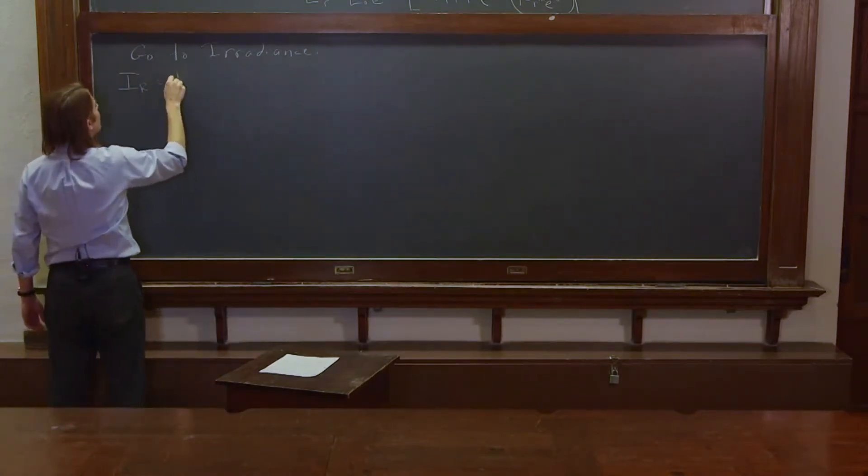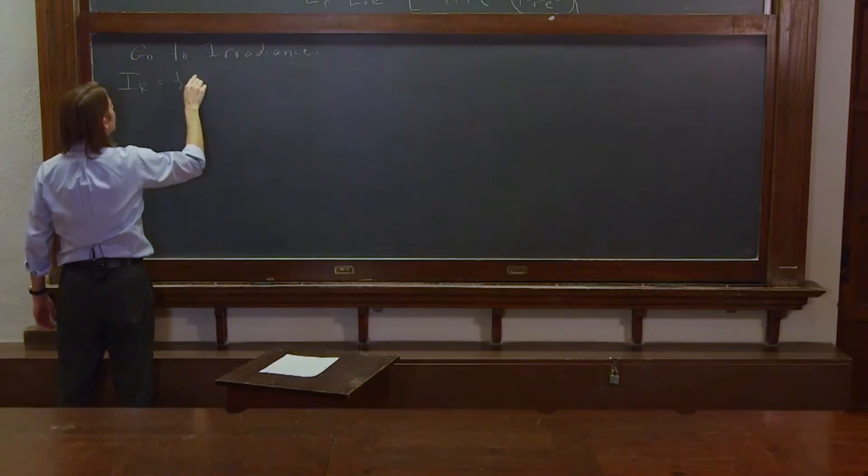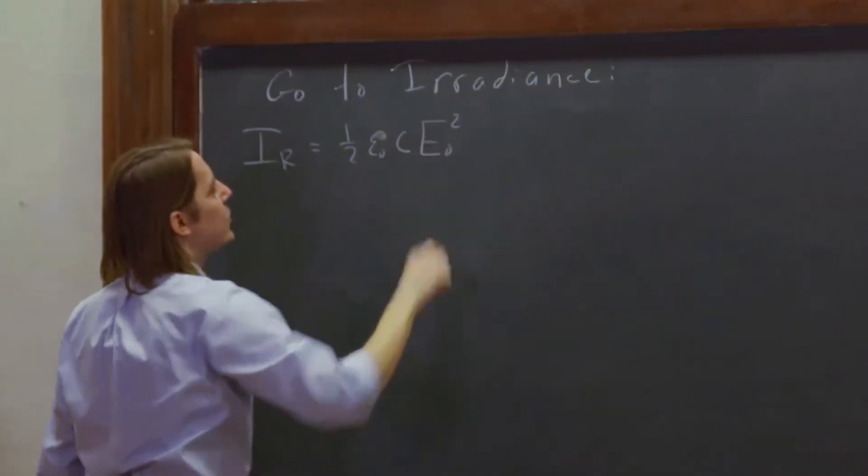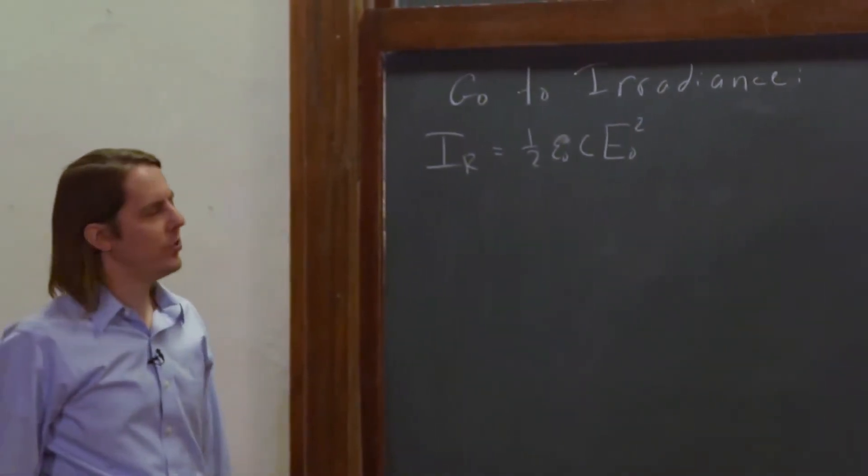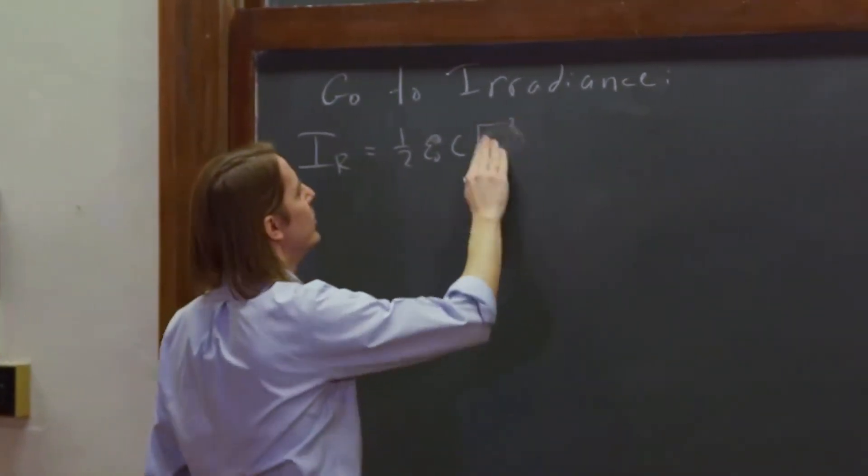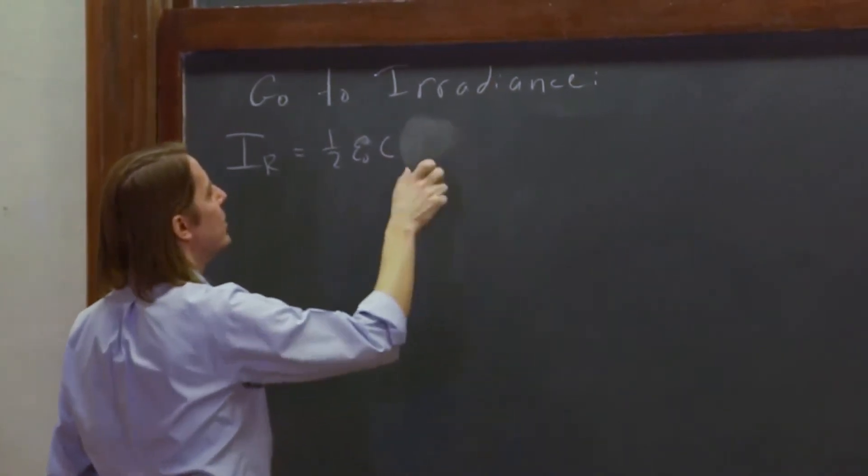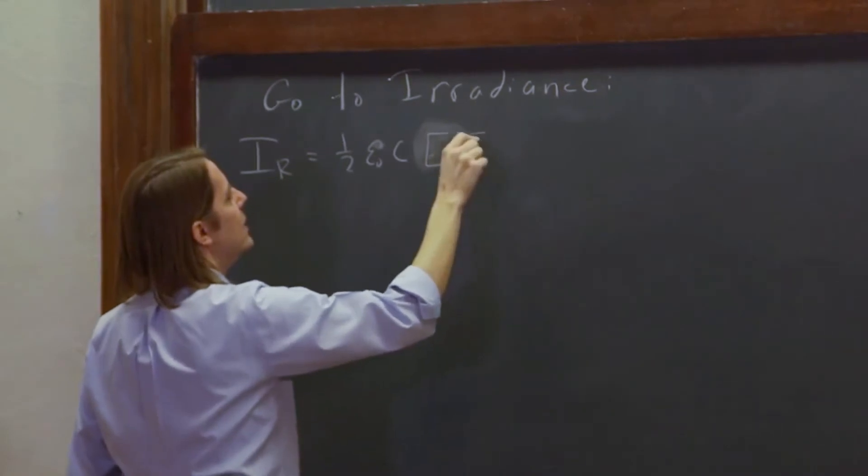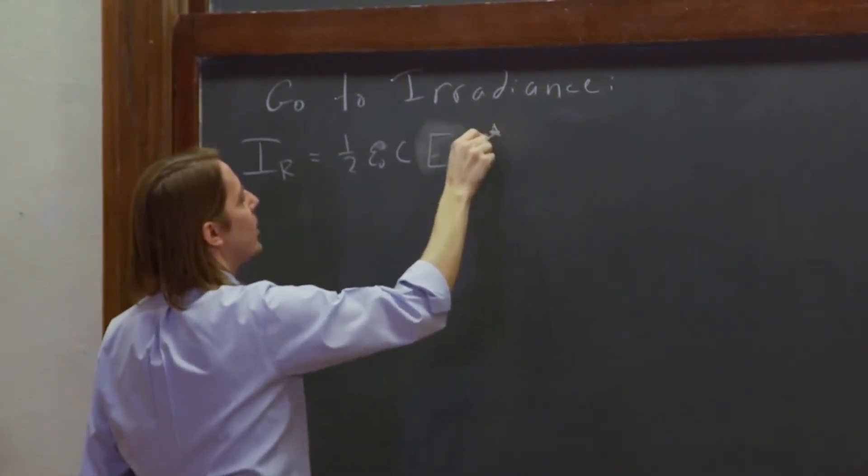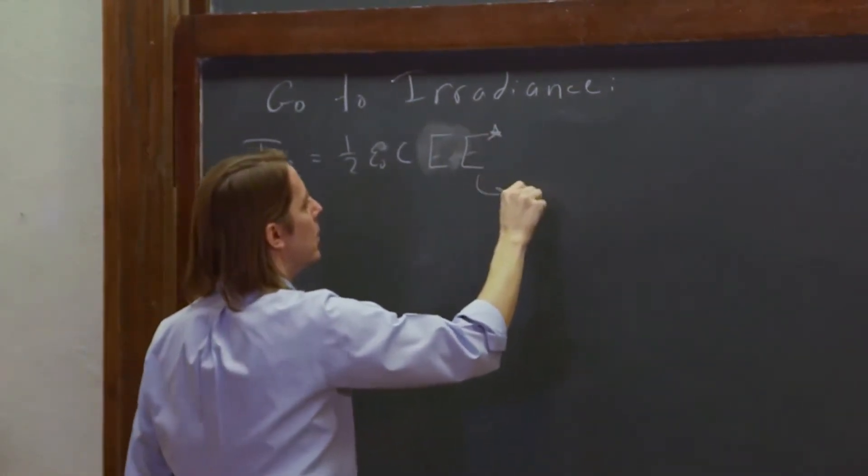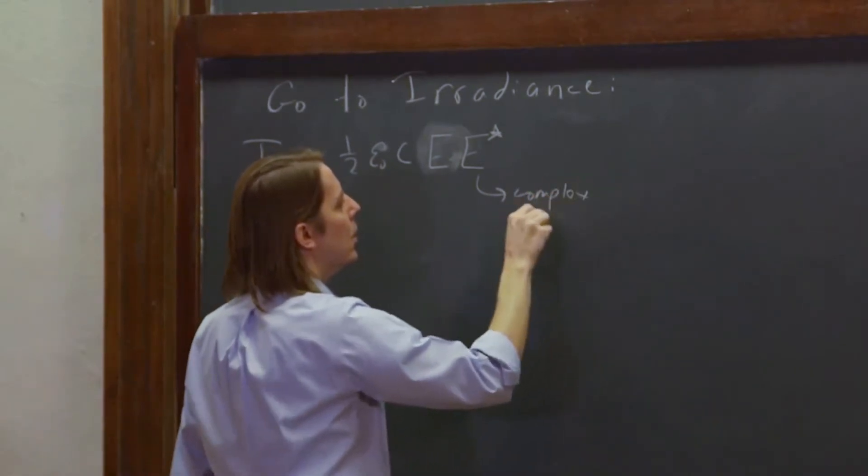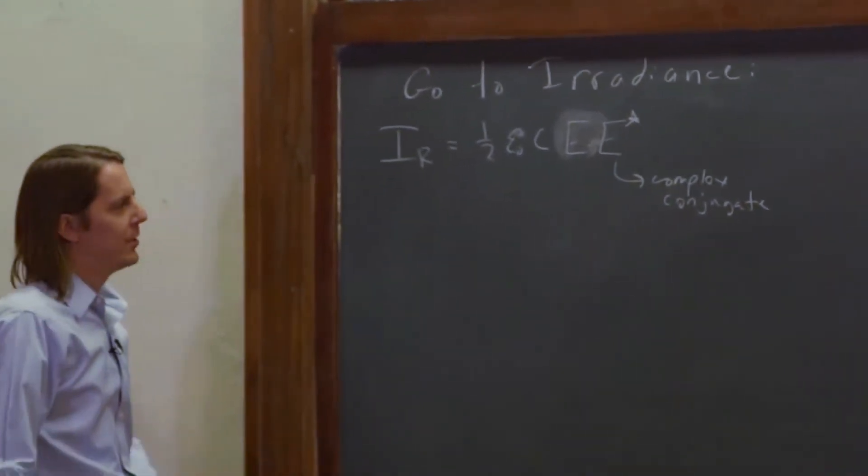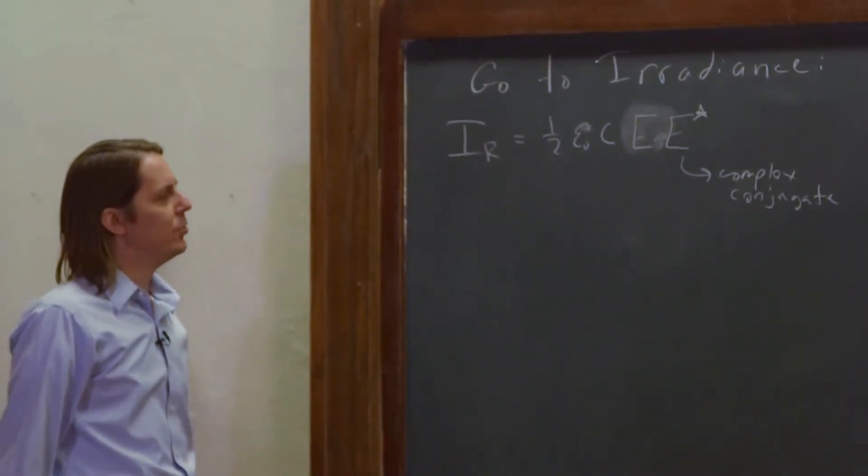So the reflected irradiance. We know that it's 1/2 epsilon naught C. We would write it as E naught squared when we were using cosines to describe everything, or sinusoids. Now that we're doing complex, we actually know that that means the E field times E star, times the complex conjugate. When you're using complex numbers, you want the magnitude. That's how you do it. This is really the magnitude squared.